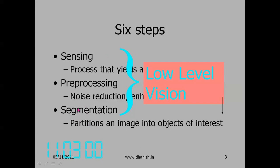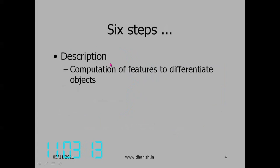After segmentation, once we identify the areas and objects in the image, we don't identify the object as it is but study some areas in detail. The next stage is high-level processing. Description involves computation of features to differentiate objects — just like how we recognize or describe people. For example, he is a tall, thin person. Similarly, we compute parameters of the object: what is its length, width, etc.